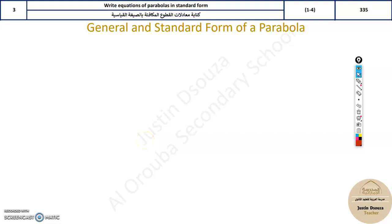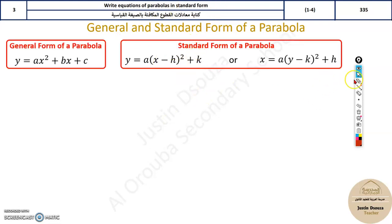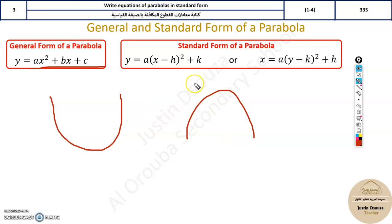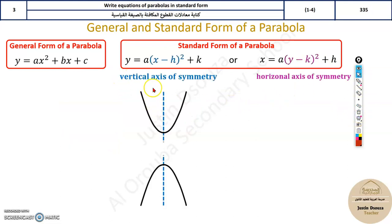The third topic is writing parabolas in standard form. We will see the general and the standard form. The quadratic function is generally given as the general form of a parabola. When you graph it, it will open upward or downward. The standard forms are: y equals a multiplied by (x minus h) squared plus k, or x equals a multiplied by (y minus k) squared plus h.